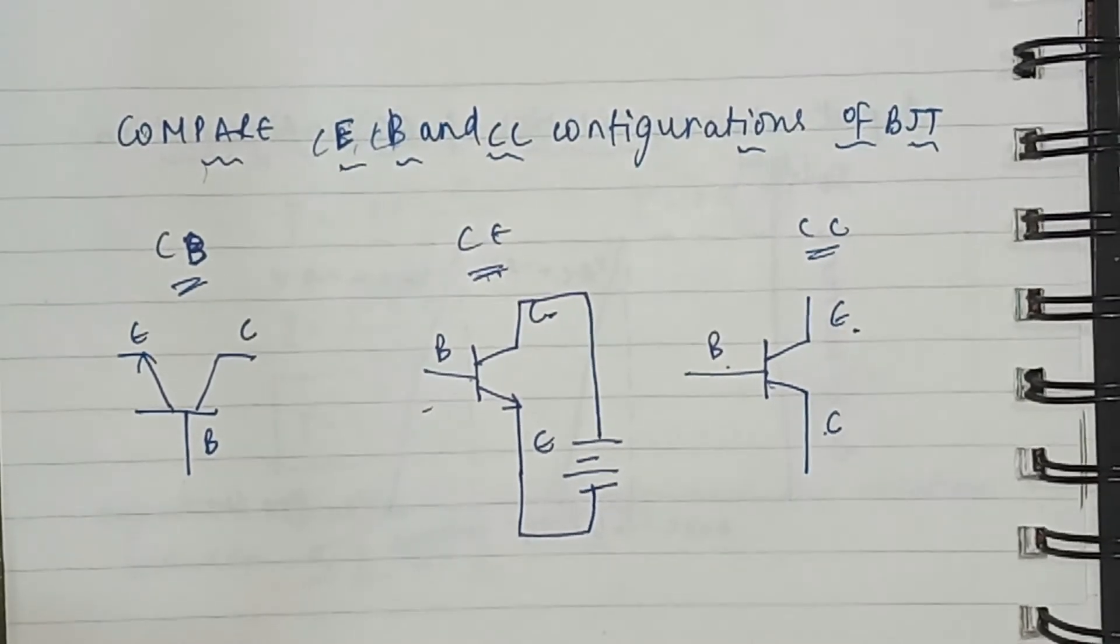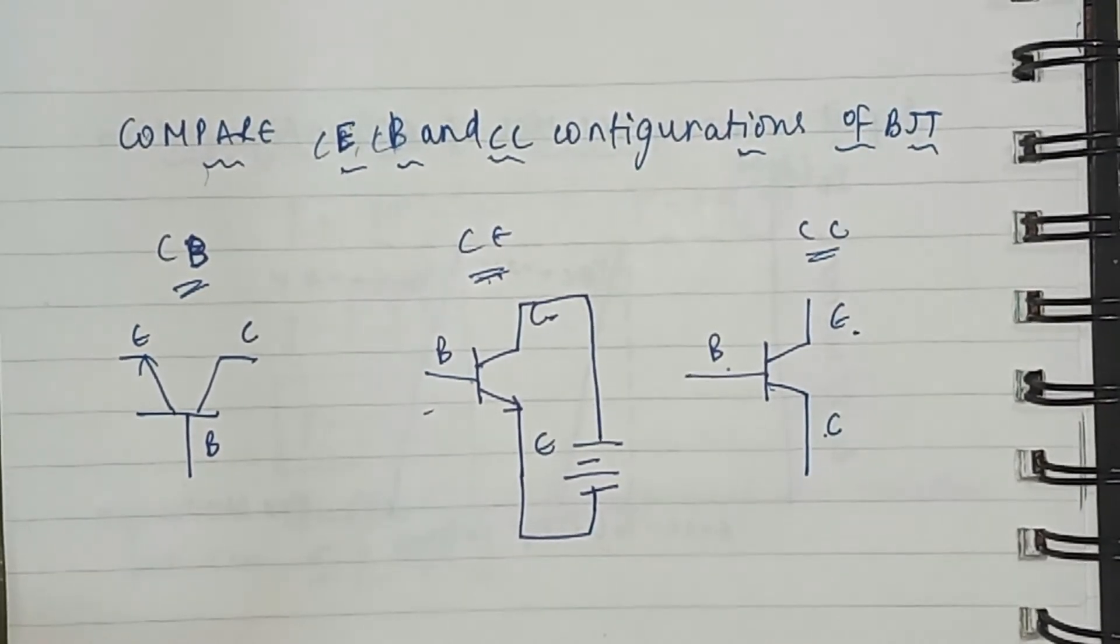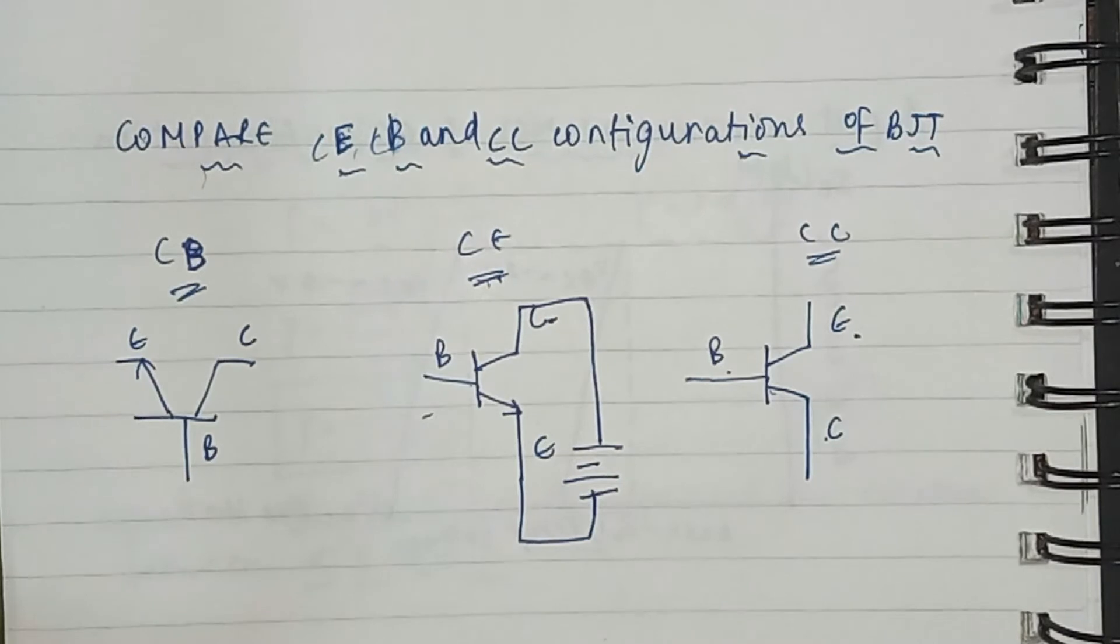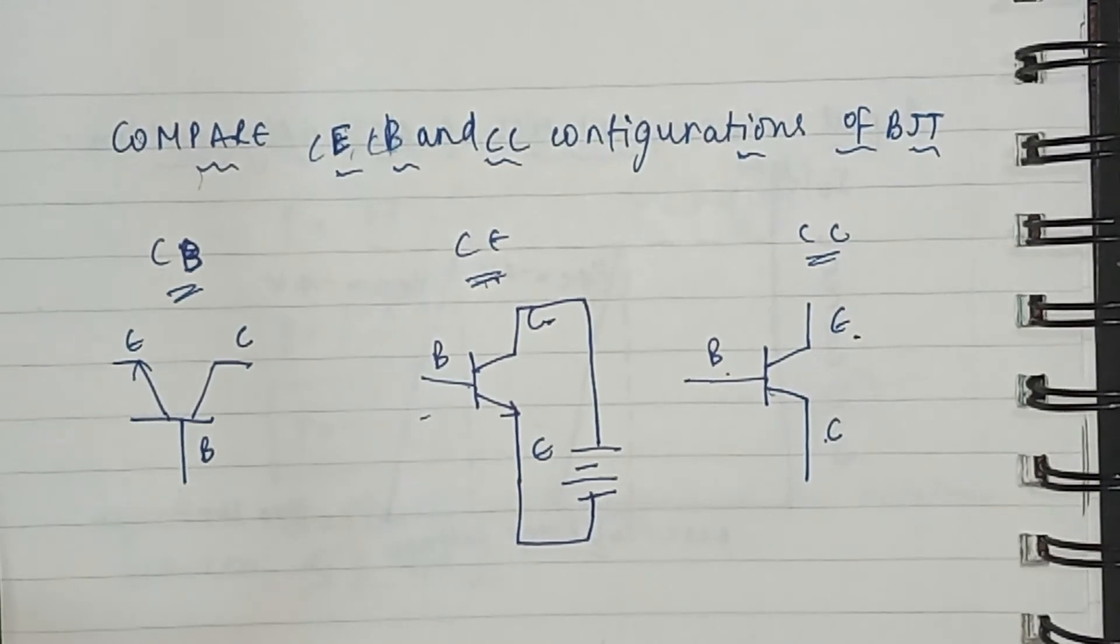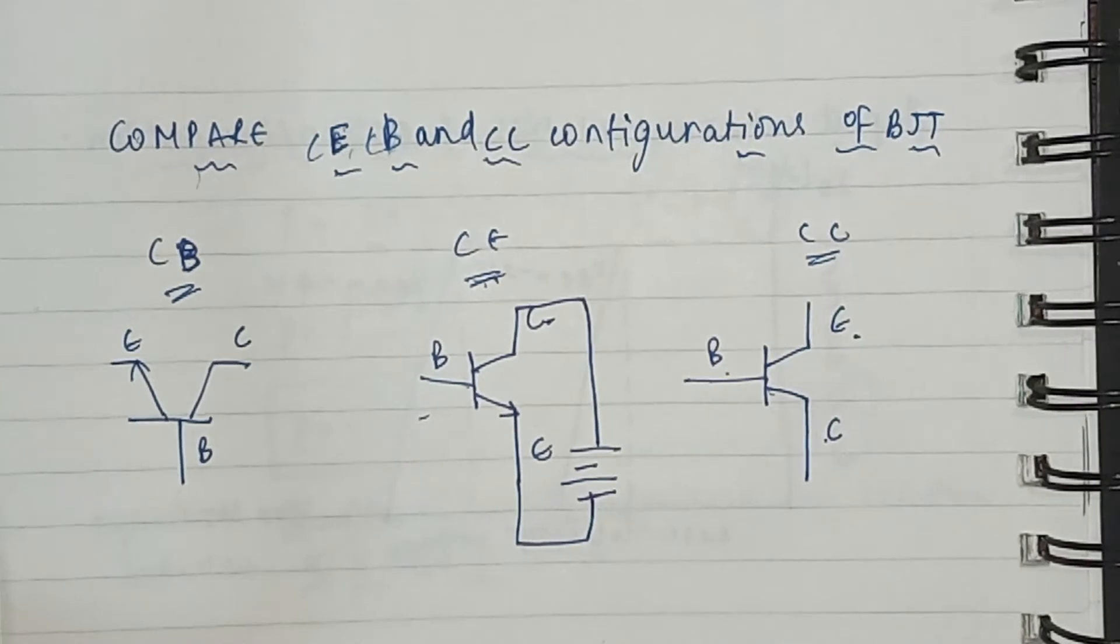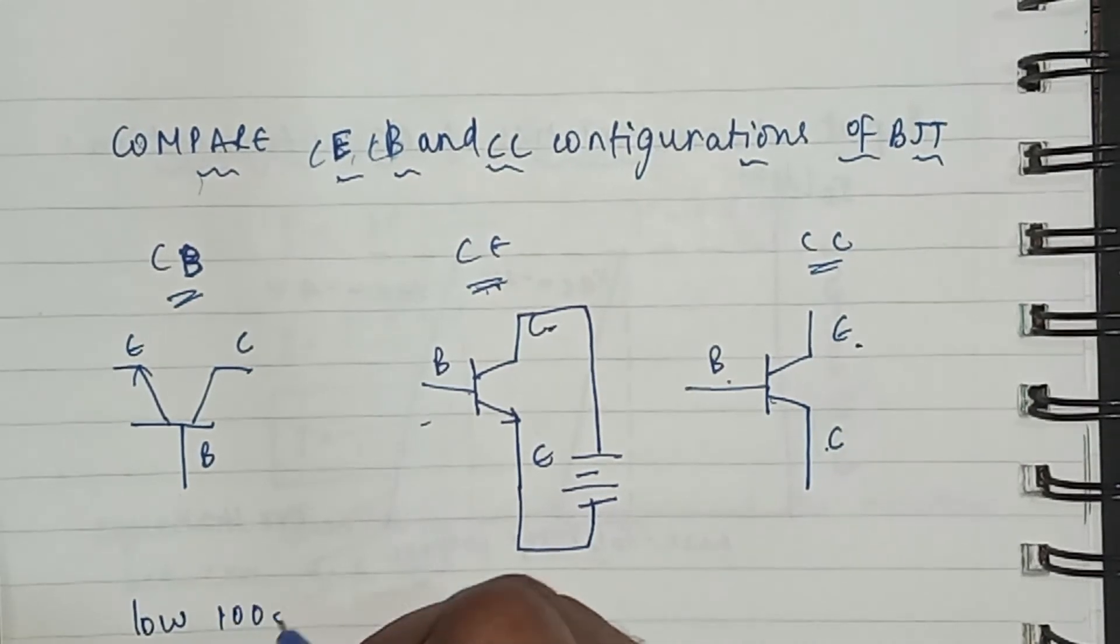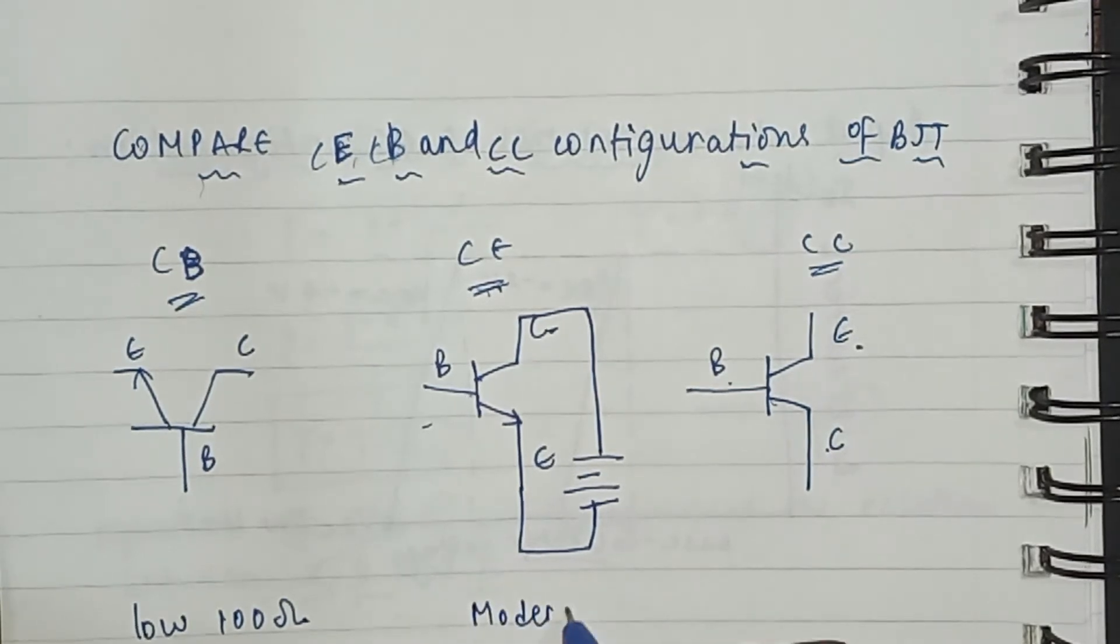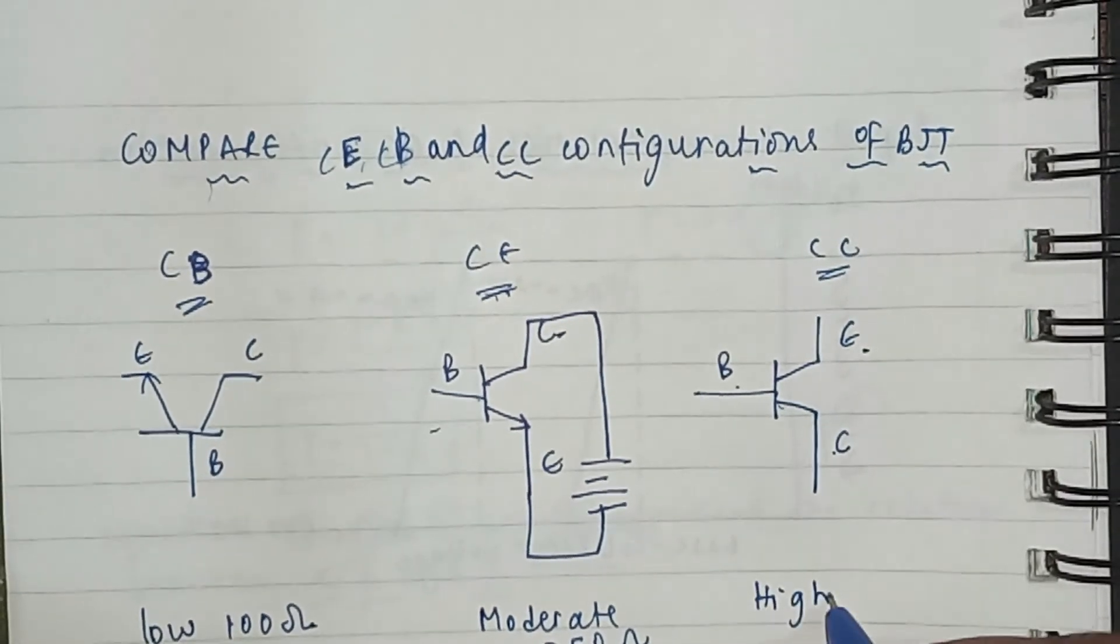When talking about the input impedance characteristics, the input impedance for CB is low, that is around 100 ohms. The CE configuration has moderate input impedance, that is 750 ohms, while CC has high input impedance, 750 kilo ohms.